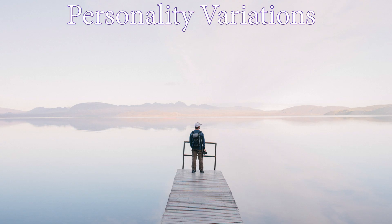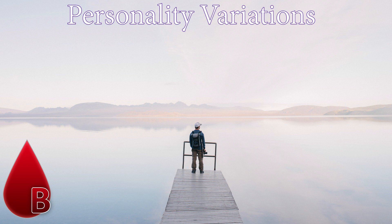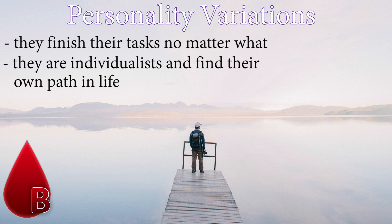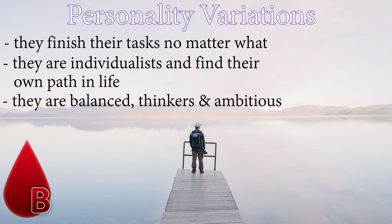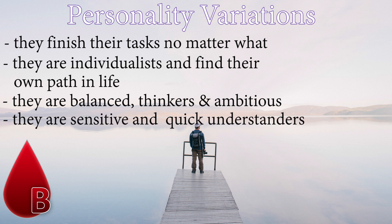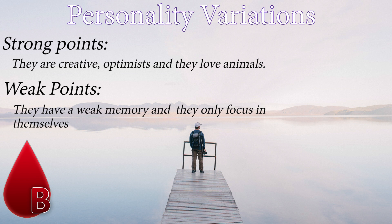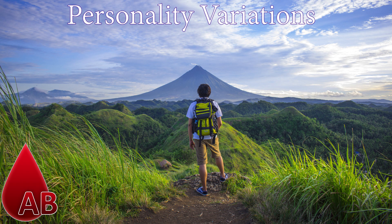Group B: Individuals with blood group B start a task and finish it no matter what. They are individualistic and find their own path in life — balanced thinkers like group A and ambitious like group O. They are sensitive and quick understanders, however they hesitate to take challenges. Strong points: creative, optimistic, and they love animals. Weak points: weak memory and self-focused.